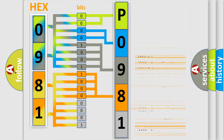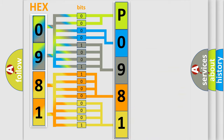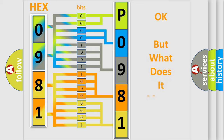A single byte conceals 256 possible combinations. We now know in what way the diagnostic tool translates the received information into a more comprehensible format. The number itself does not make sense to us if we cannot assign information about what it actually expresses.